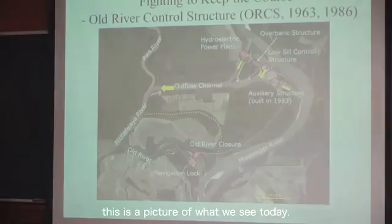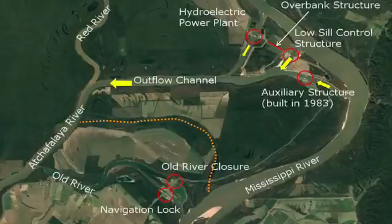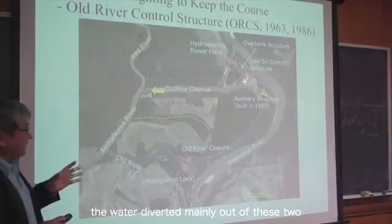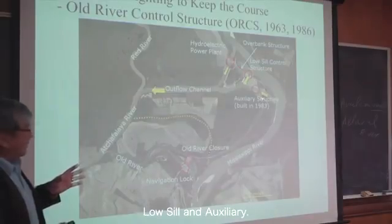This is a picture of what we see today. We have three structures here, but the water diverges mainly at these two: the Low Sill and the Auxiliary.